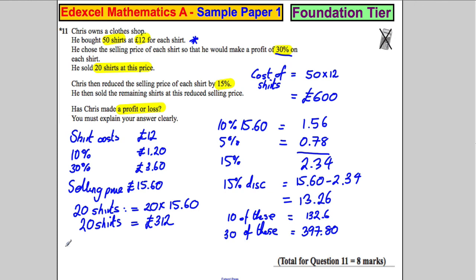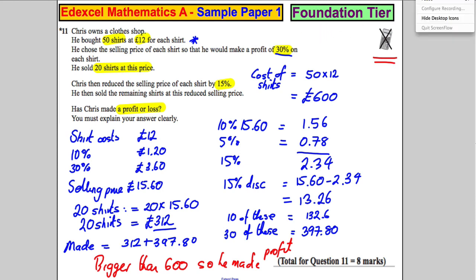So he made - this is getting confusing, you'd have more space on the page - he made £312 plus £397.80. Now this is clearly bigger than £600, so he made a profit. I have to admit, I'm quite dubious that that would be a non-calculator question. I've never seen one in the real ones like that, but it's worth practicing.